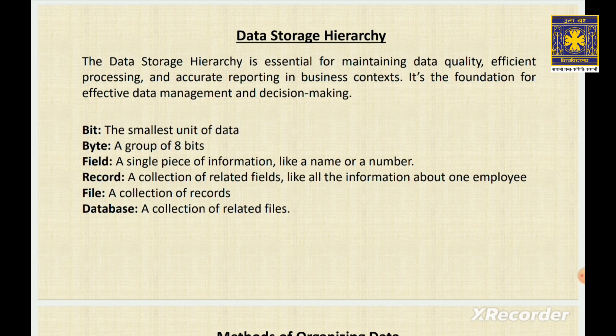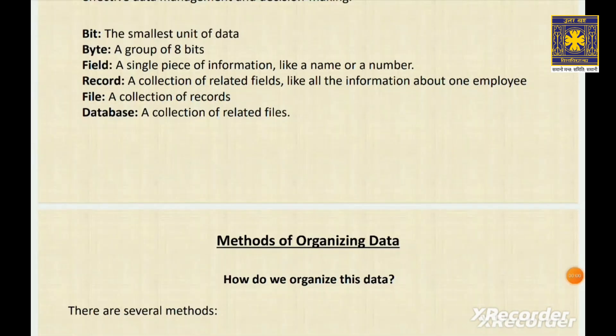Here you can see the storage hierarchy in ascending order with simple examples. A bit is the smallest piece of data — like a tiny switch that can be on or off. A byte is a group of 8 bits, like a small piece of information. A field is a specific piece of data, like a person's name. A record is a collection of related fields, like all the details about one student. A file is a collection of records, like a folder with all student information. A database is a collection of related files, like a whole filing cabinet full of folders.